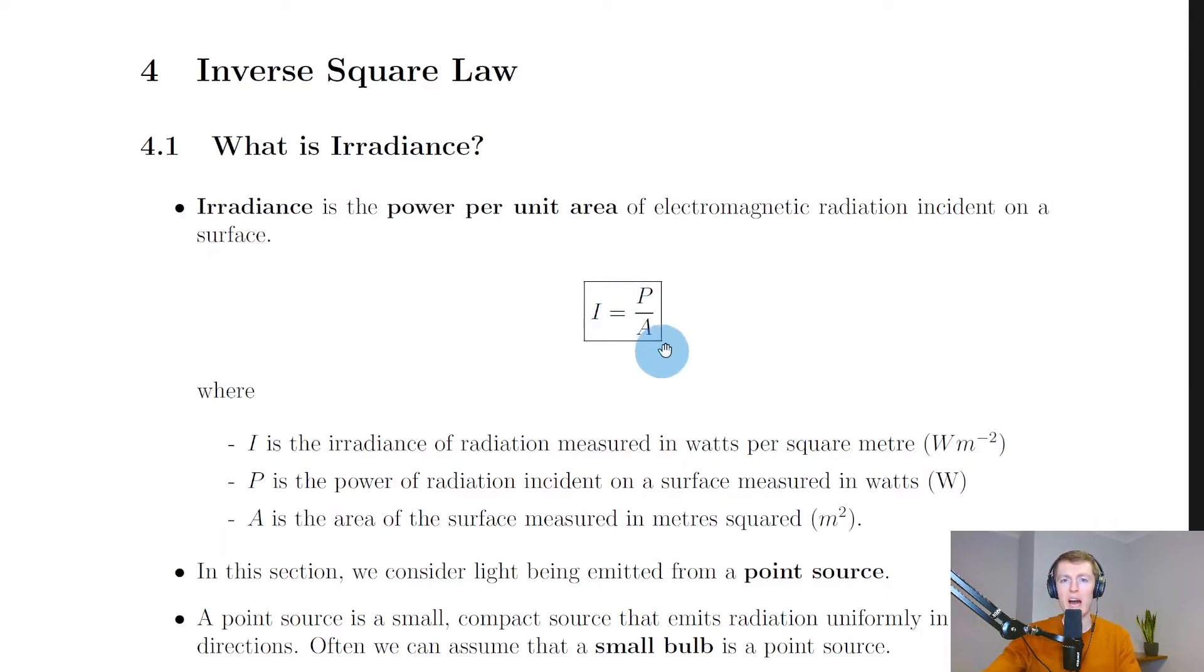We can describe irradiance using this equation: I equals P over A, where I is the irradiance of radiation measured in watts per square meter, P is the power of radiation incident on a surface measured in watts, and A is the area of the surface measured in meters squared.